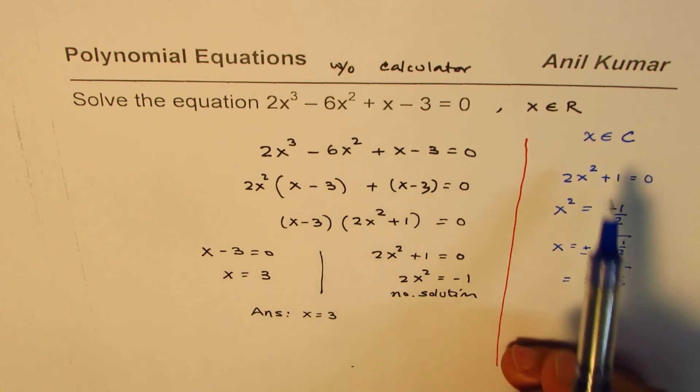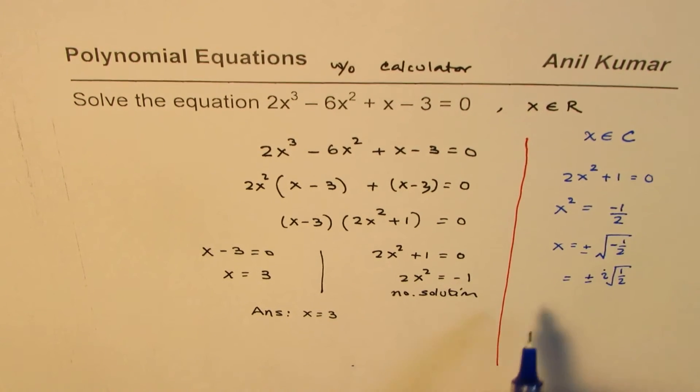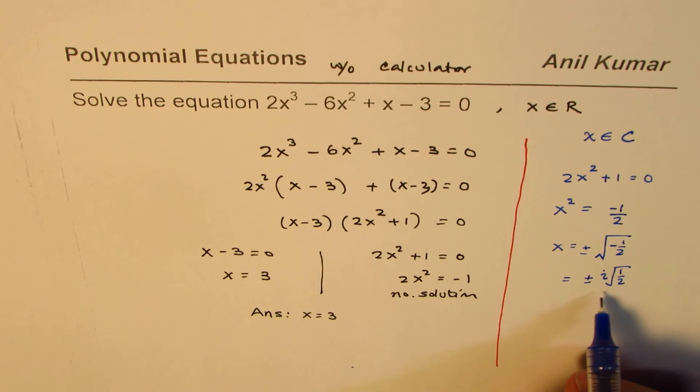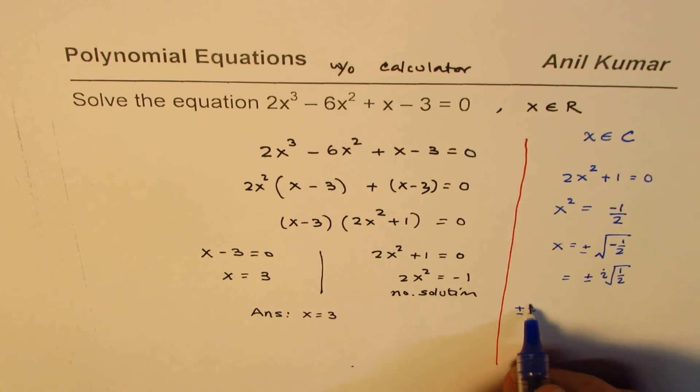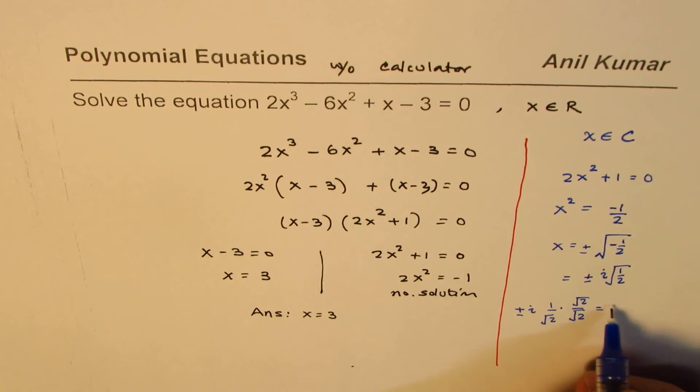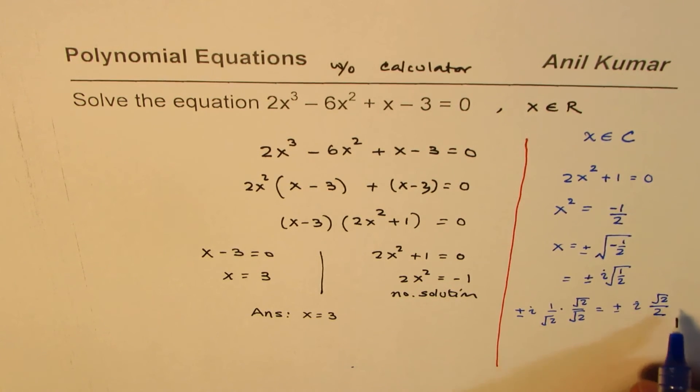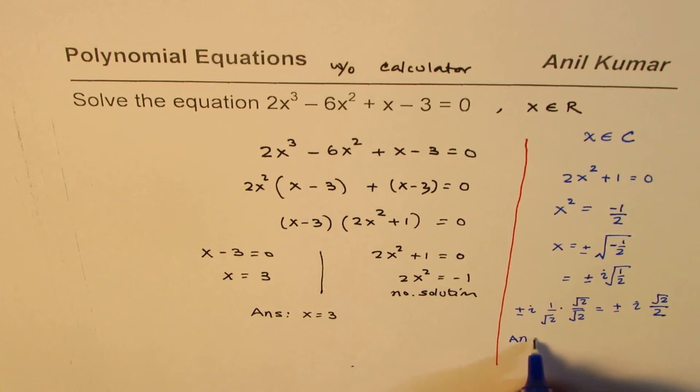That will add two more solutions, so cubic equation will basically have three solutions if we are considering complex numbers in this particular case. Now at times if there's a multiple choice question, you may write this answer in a different way, that is you may like to rationalize it. You got plus minus i, it is 1 over square root 2. You can multiply and divide by square root 2. In that case you get plus minus i and that becomes 2, so square root 2 over 2.